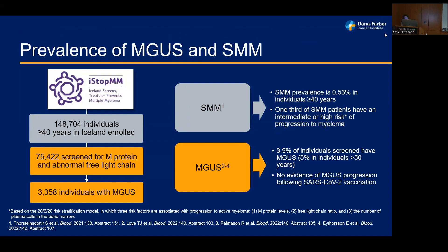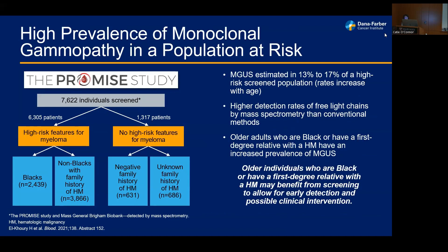Interesting results have emerged from both studies. The I-STOP-MM study established the prevalence of smoldering myeloma in individuals over 40 at roughly half a percent, with about one-third of those individuals being intermediate or high risk. Among patients who screened positive for MGUS, prevalence was roughly 3.9% in individuals over 40 and 5% over 50. From the POMIS study, the frequency of MGUS among individuals with a risk factor appears to be higher — roughly 13% to 17% screen positive for a monoclonal gammopathy.